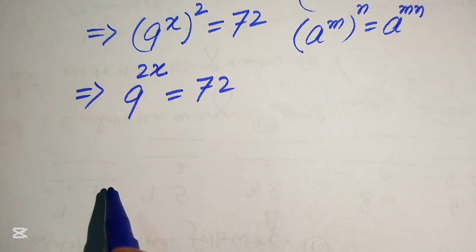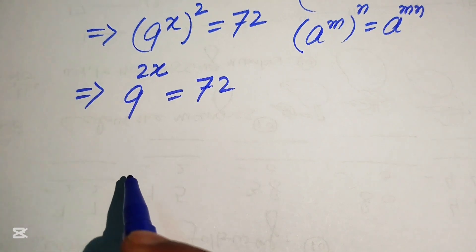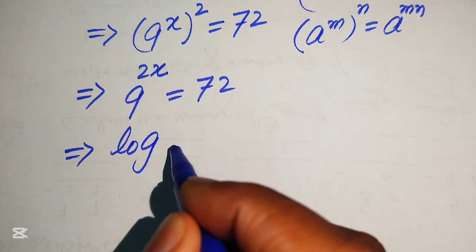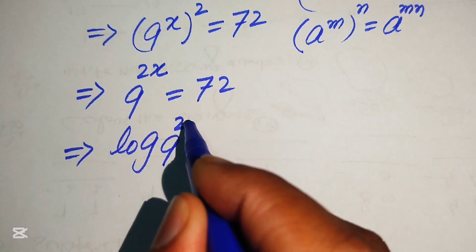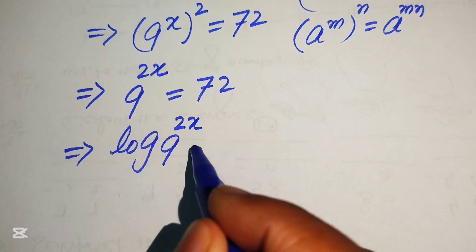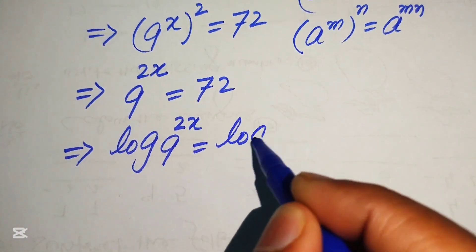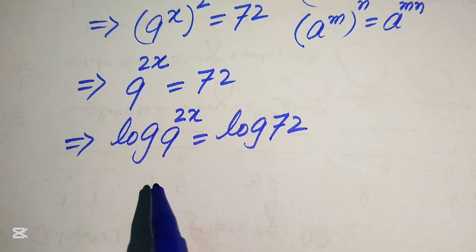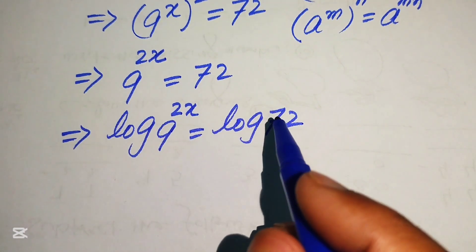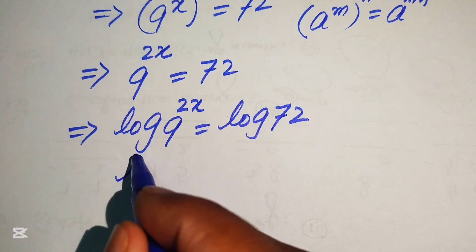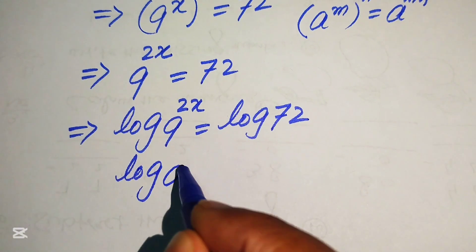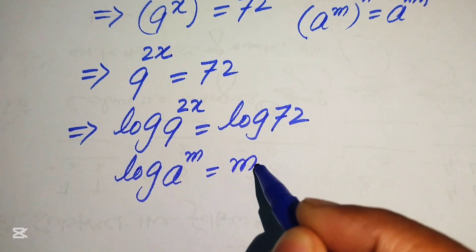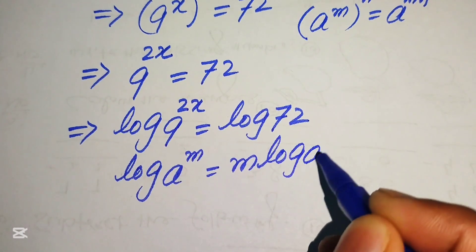To find the value of x, we take the log of both sides. This gives log of 9 to the power of 2x equals log of 72. Now we apply the log power property: log of a to the power of m equals m times log a.